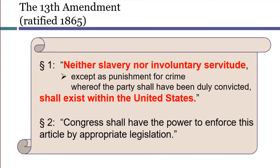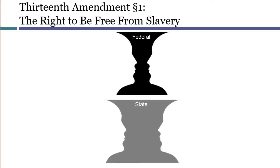The 13th Amendment was the first part of the Constitution to explicitly combine an individual right with a congressional power. Section 1 created a new individual right, previously unknown under the U.S. Constitution: the right not to be held in slavery. By saying that slavery and involuntary servitude shall not exist anywhere within the United States, this right was effective against both the federal and state governments. The new individual right against slavery would act as a limit against any source of government power that might otherwise be understood to authorize laws on the subject.